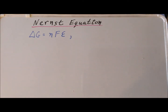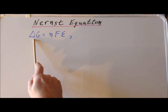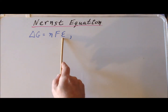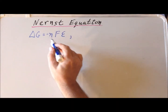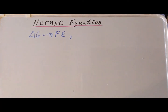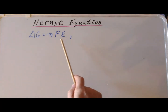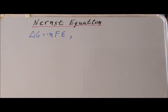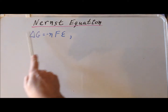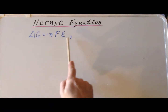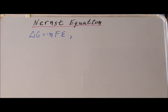Recall our relationship between the Gibbs free energy, delta G, and the electromotive force of a cell: delta G is equal to minus N times F times E. F here is the Faraday constant, which is the number of coulombs of charge in one mole of electrons. N is the number of moles of electrons transferred. And this is a very important minus sign — when we have a spontaneous process where delta G is negative, that corresponds to a process where the electromotive force E, the voltage, is a positive number.